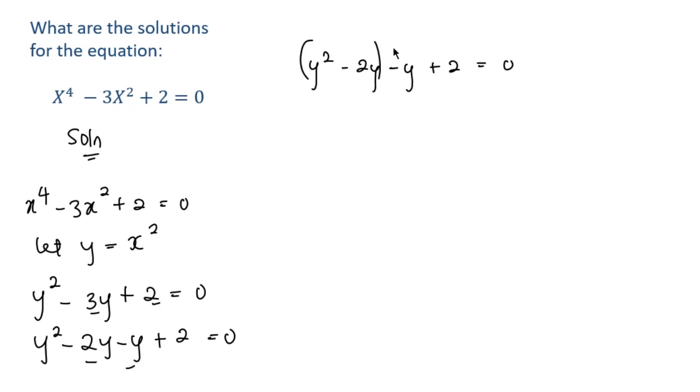Then we can say y times open bracket y minus 2. We factor out y from the first group. And the second would be minus 1 times open bracket y minus 2 equals 0.